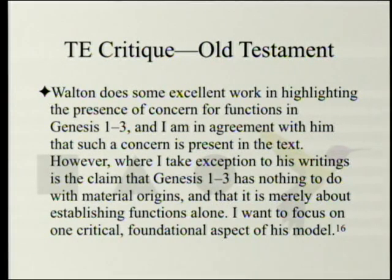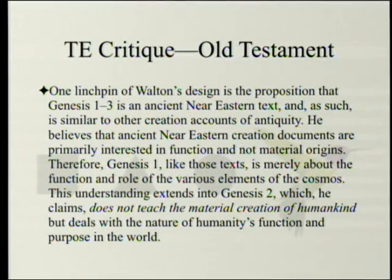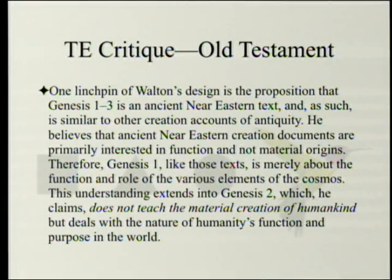One linchpin of Walton's design is the proposition that Genesis 1-3 is an ancient Near Eastern text and as such is similar to other creation accounts of antiquity. He believes that ancient Near Eastern creation documents are primarily interested in function and not material origins. Therefore Genesis 1, like those texts, is merely about the function and role of the various elements of the cosmos. This understanding extends into Genesis 2, which he claims does not teach the material creation of humankind but deals with the nature of humanity's function and purpose in the world.